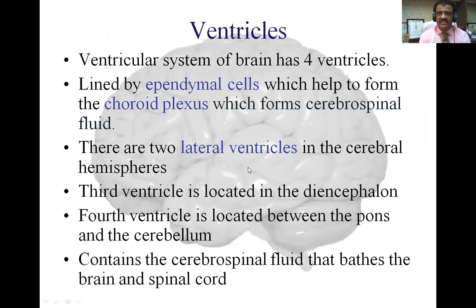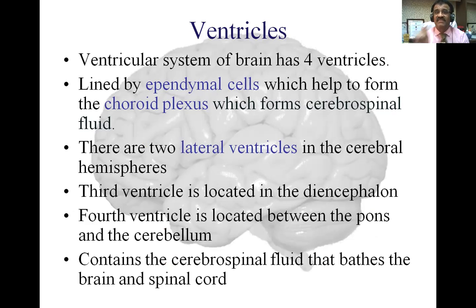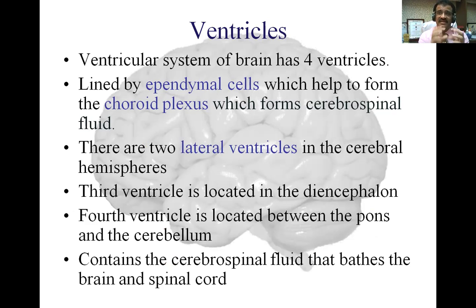Now we will go to the ventricular system. There are ventricles in the brain. Though the brain is a solid organ, it has a space deep inside called the ventricular system, which contains cerebrospinal fluid. There are four ventricles in the brain, lined by ependymal cells which help form the choroid plexus. The choroid plexus secretes or forms the cerebrospinal fluid. It is a tuft of capillaries covered by ependymal cells.